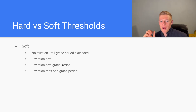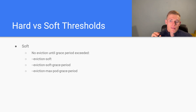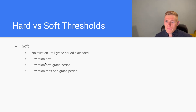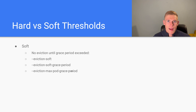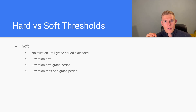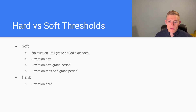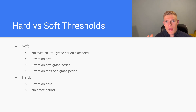We also have the option to pass eviction-max-pod-grace-period, which specifies the time we allow pods to gracefully shut down. This is separate from the eviction soft grace period, which is the time before evictions even begin. Eviction max pod grace period applies after that — once we decide to evict a pod, it defines how long we allow that pod to shut down gracefully. With hard evictions, we simply pass --eviction-hard with no grace period; pods are killed immediately as soon as the threshold is breached.